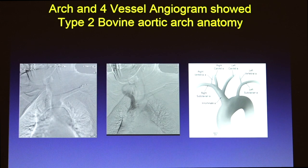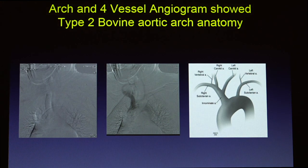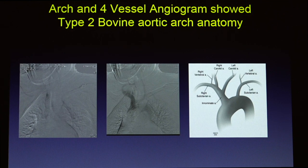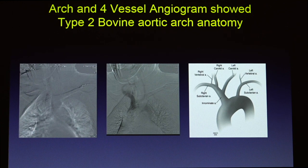We brought her back to the cath lab and initially started with the right femoral artery approach, which is where I usually start for any carotid artery stenting cases. We did not use the power injector because of the creatinine of 1.6, so I was doing a hand injection. Even in those pictures, you can easily see that this is a bovine aortic arch — specifically a type 2 bovine arch. You can see the takeoff of the left carotid artery is at 90 degrees coming off the brachiocephalic trunk. When I saw that, I stopped and said there is no way to access this artery from the femoral artery approach.